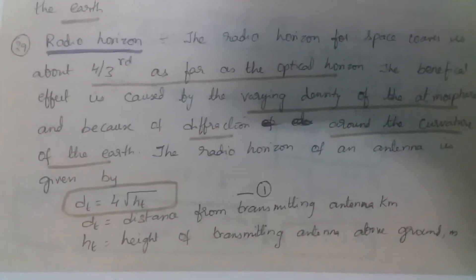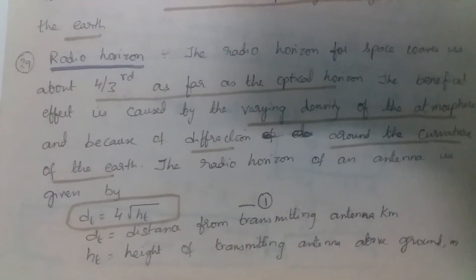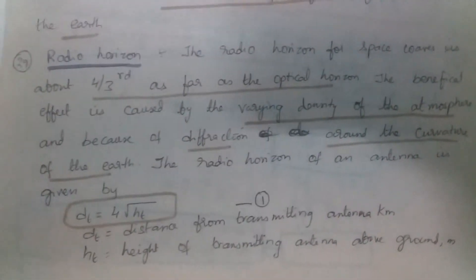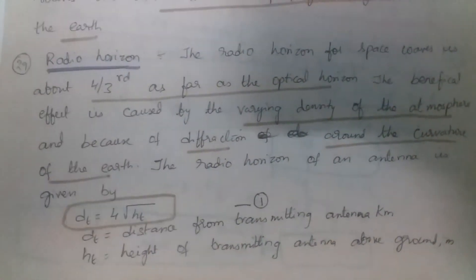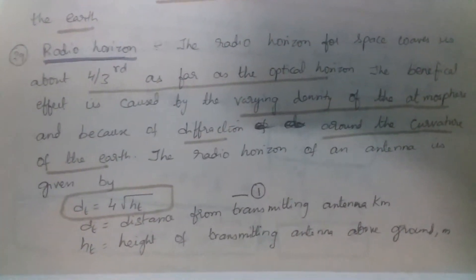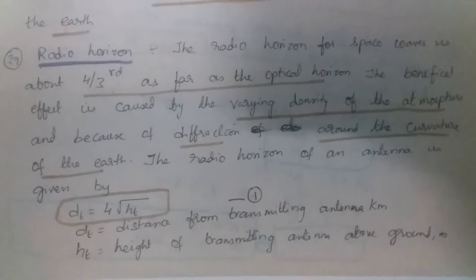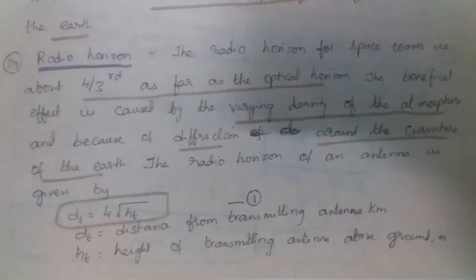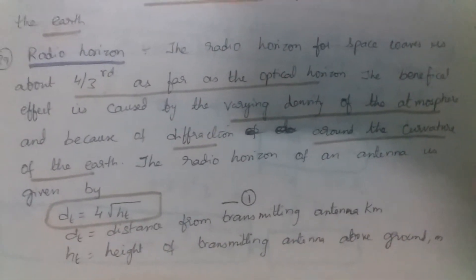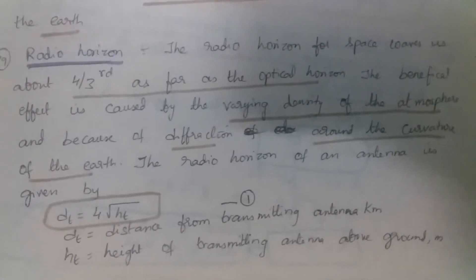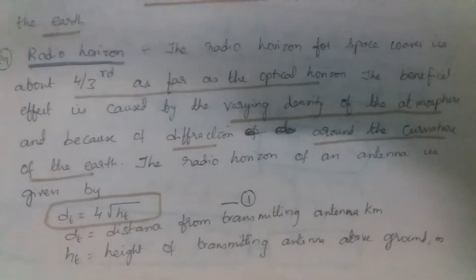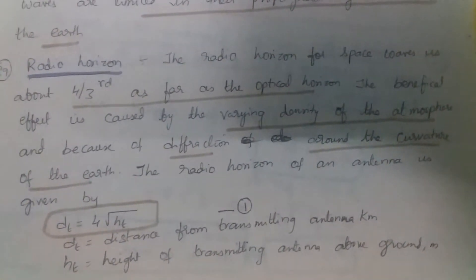The radio horizon for a space wave is about four-thirds as far as the optical horizon. This beneficial effect is due to the varying density of the atmosphere and because of diffraction around the curvature of the Earth. The radio horizon of an antenna is given by dt, the distance from the transmitting antenna where the signal is received: dt = 4√ht, where ht is the height of the transmitting antenna above ground. The more the height of the transmitting antenna, the more distance the signal can reach.